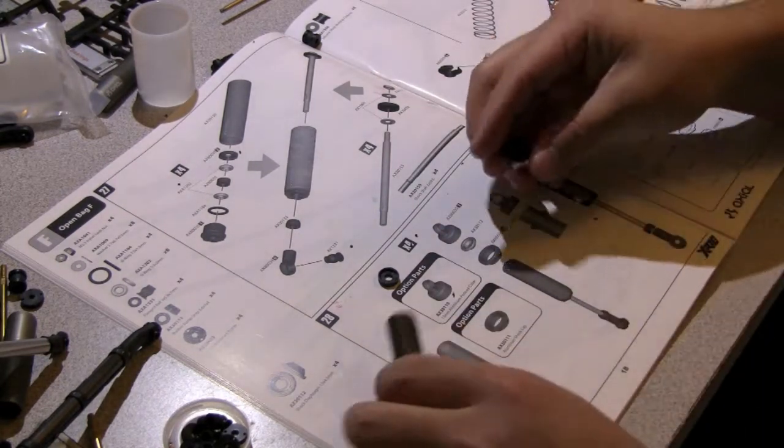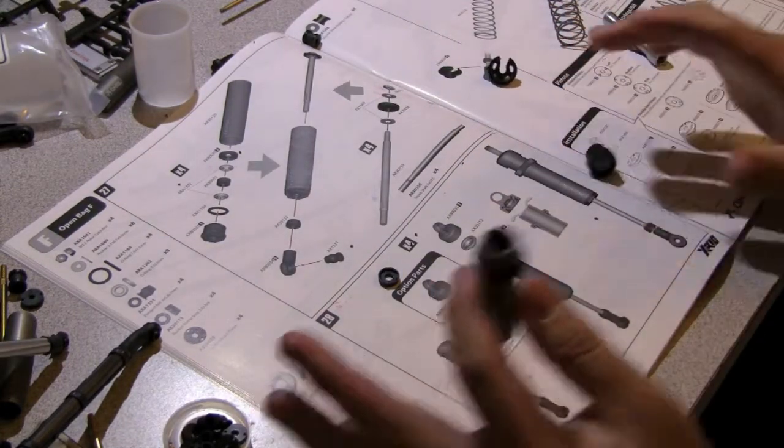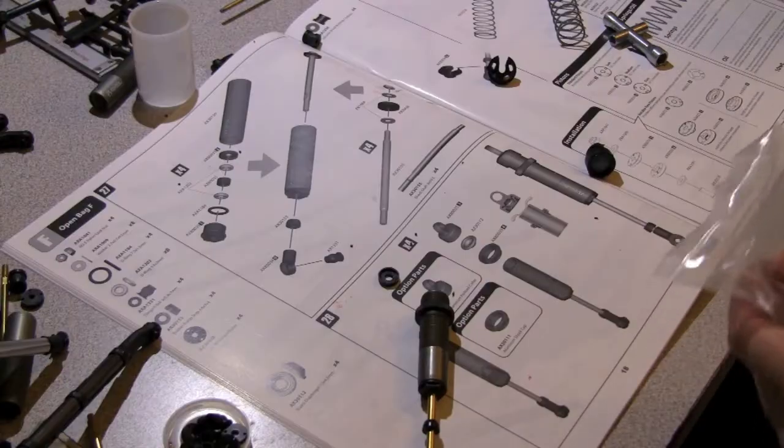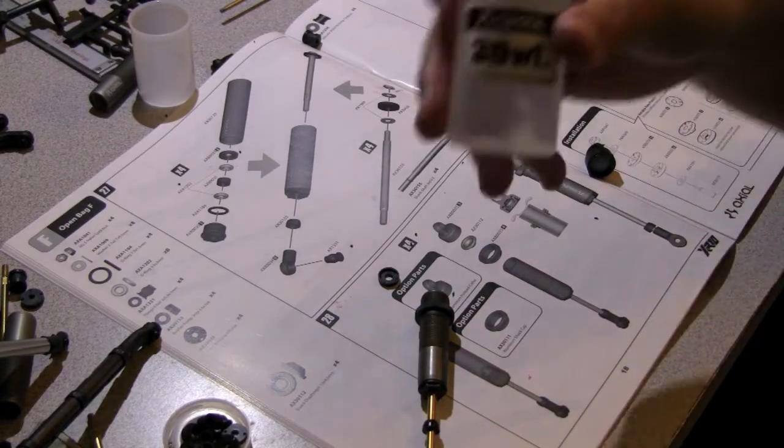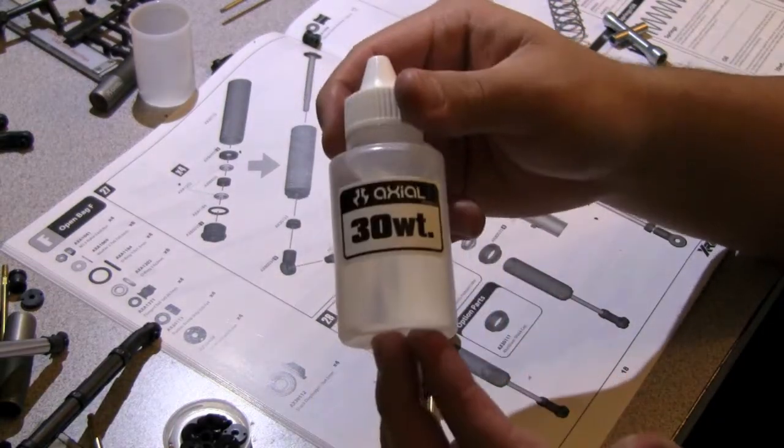and just screw it onto the aluminum body. Now is the time to put in your 30 weight shock oil. So they give you a pretty big amount of shock oil in this bottle.